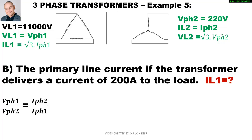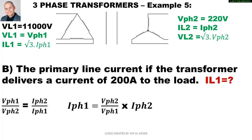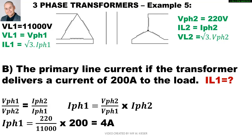To find the primary line current if the transformer delivers 200 amps to the load: using the equation, I phase 1 equals V phase 2 over V phase 1 multiplied by I phase 2. That gives 220 over 11,000 multiplied by 200 amps, resulting in a primary phase current of 4 amps. However the question asks for the line current, so IL1 equals square root 3 multiplied by I phase 1, giving a primary line current of 6.928 amps.